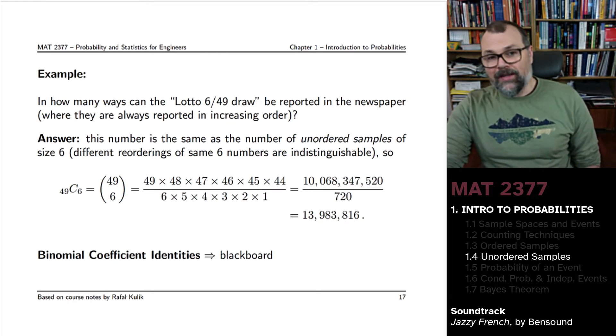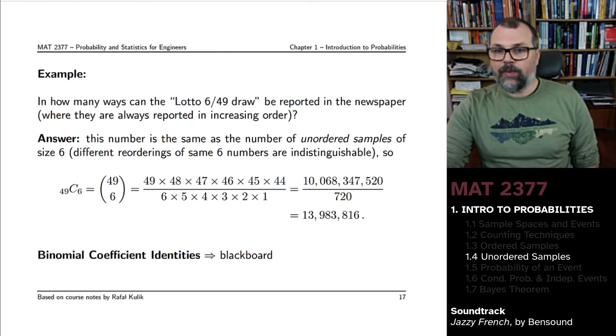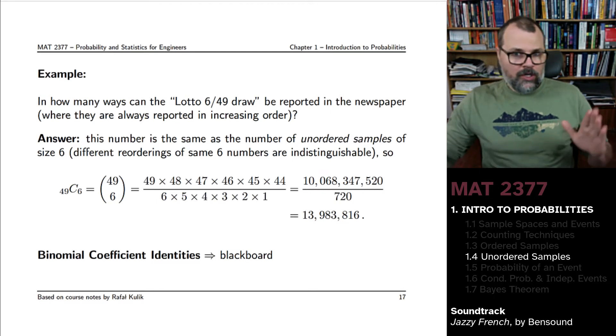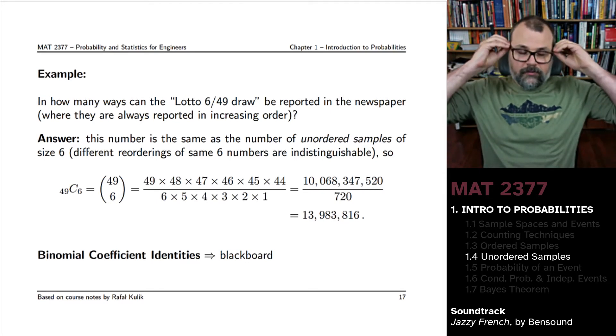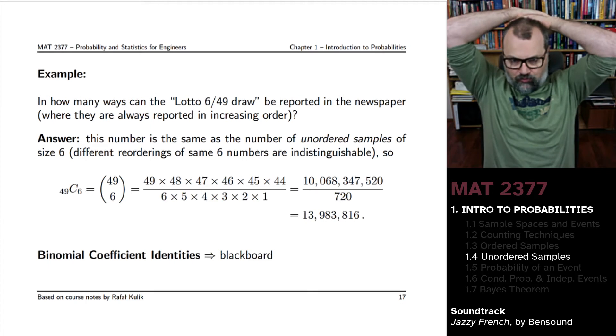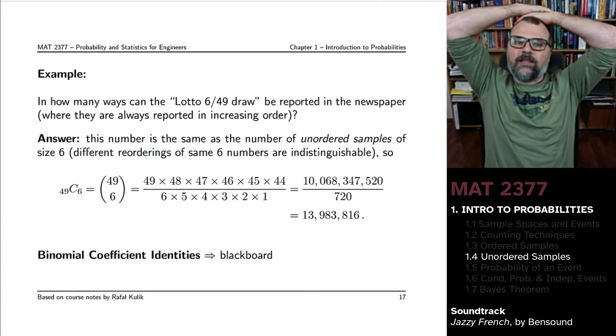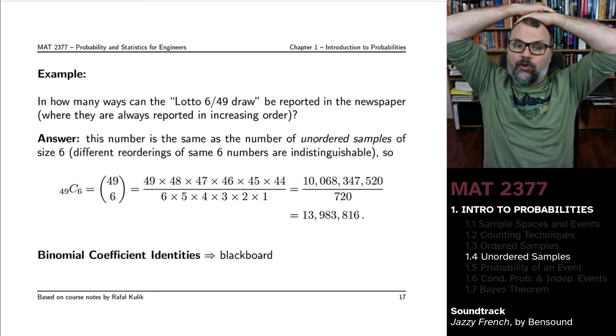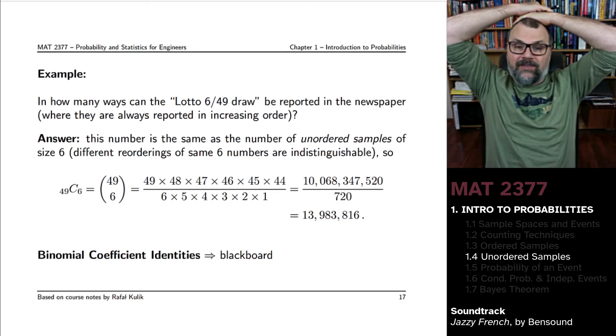So now, how many ways are there to report the results of Lotto 6/49 in the newspaper? And you always report them in increasing order. So what you're saying here is that you do not care about the order in which they were drawn. They're all indistinguishable.